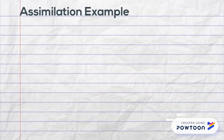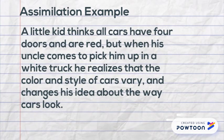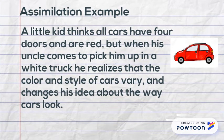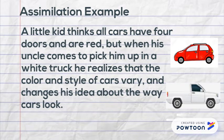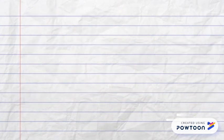With assimilation, you use current schemas to interpret the world around you. A kid thinks of a car as having four doors and being red. Once his uncle shows up and picks him up in a white truck, he realizes that color and style of cars vary and changes his idea of the way cars look.